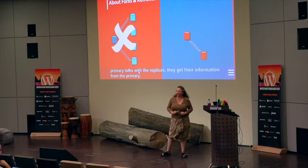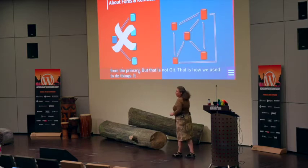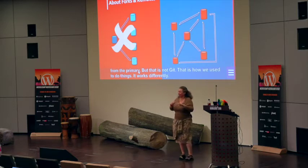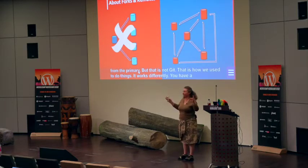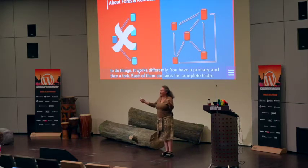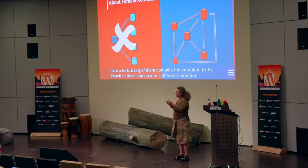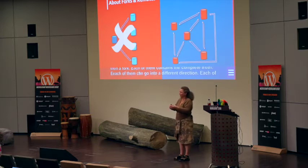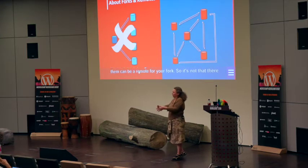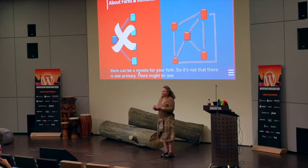Git works differently. You have a primary, but then you have a fork. And then there's another fork. Those forks can all talk together, and each of them contains the complete truth. Each of them can go a different direction, and there's still the complete truth. Each of them can be a remote for your fork. So it's not that there is one source of truth, one primary. There might be one canonical base repository from which everything started, but each of these contains the complete truth.